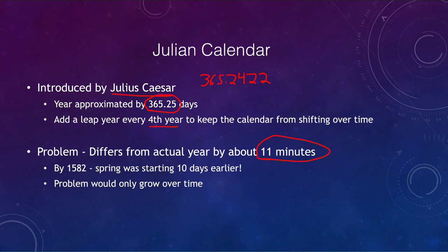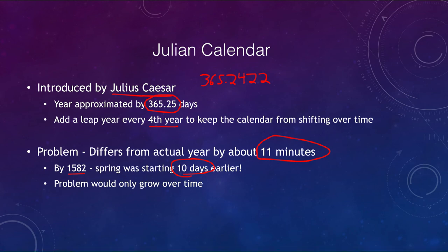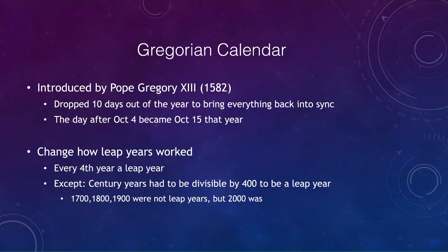The problem with the Julian calendar is that it differs from the actual year by 11 minutes. Eleven minutes isn't much — you won't notice it over a lifetime — but over long periods of time it accumulates. By 1582, that 11 minutes per year over 1,500 years had added up to 10 days. Spring was starting earlier and earlier, causing problems with the calendar, including when Easter would occur. This had to be fixed.